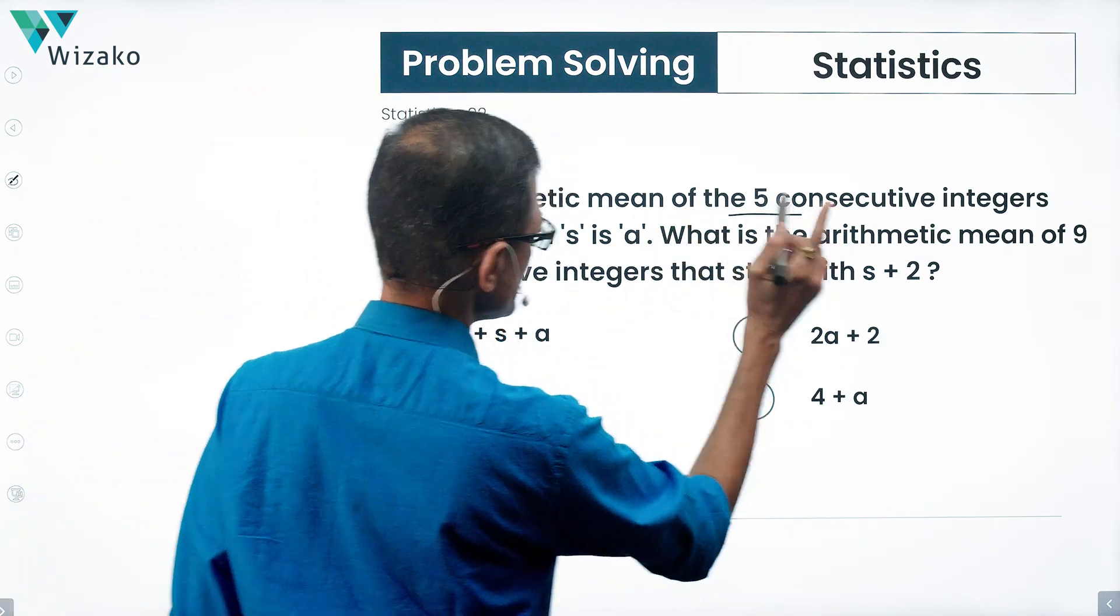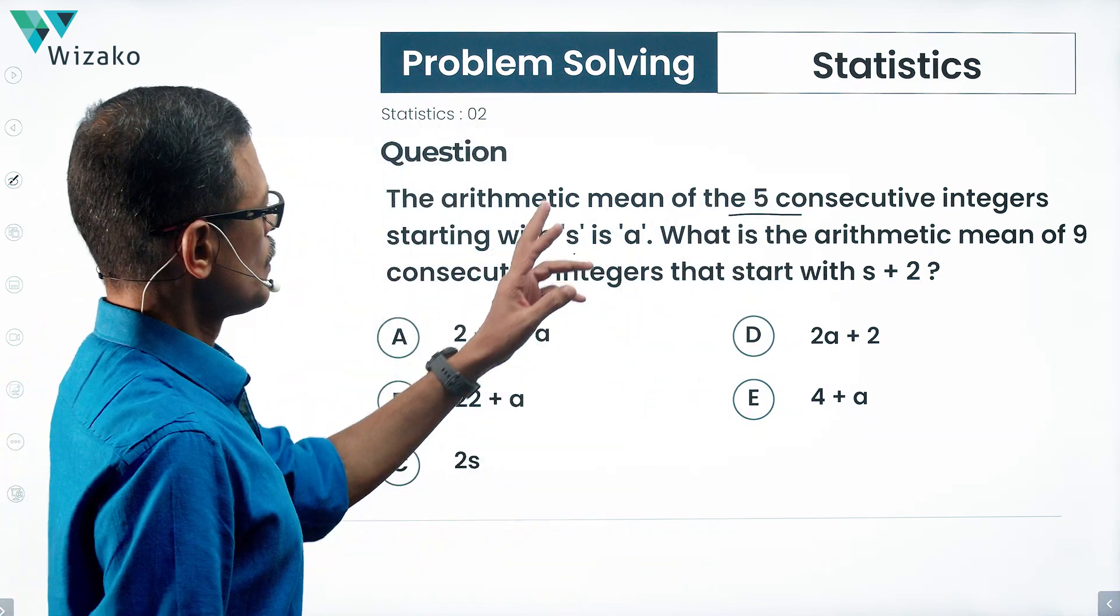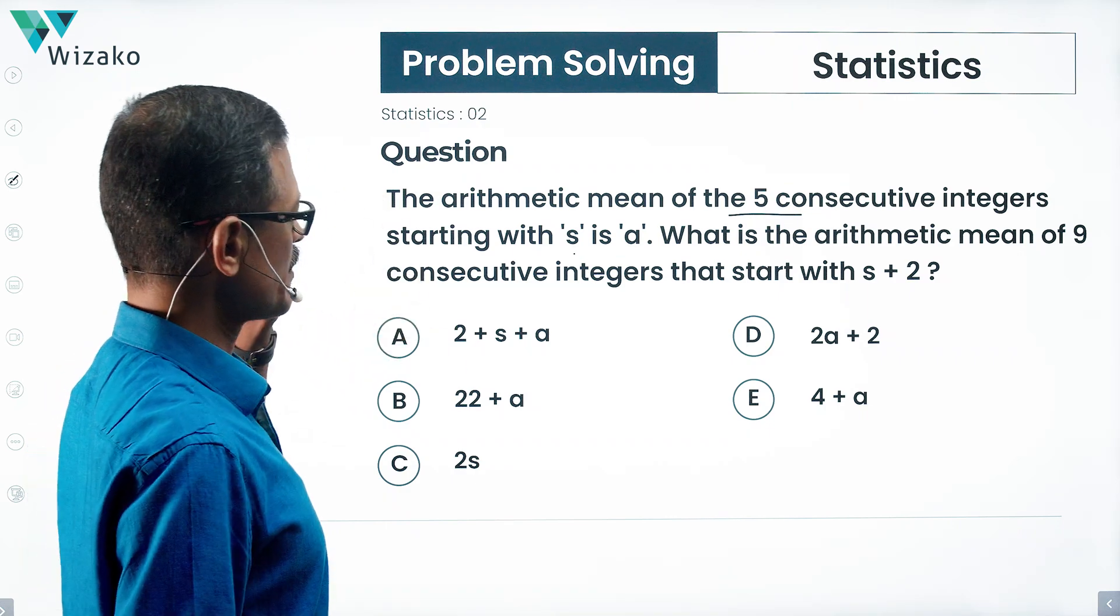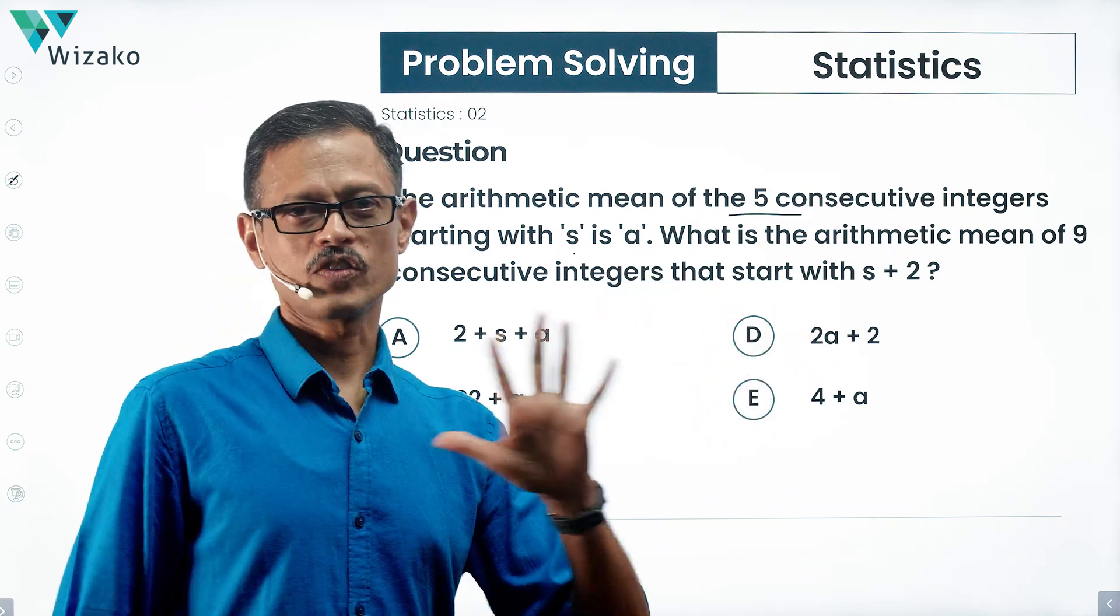The arithmetic mean of 5 consecutive integers starting with S is A. What is the arithmetic mean of 9 consecutive integers that start with S plus 2? The answers have been given in terms of S and A.